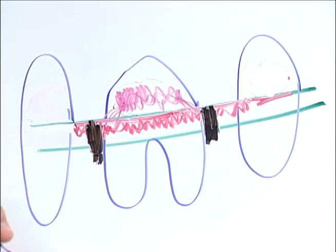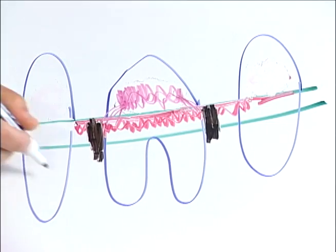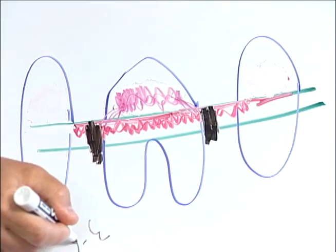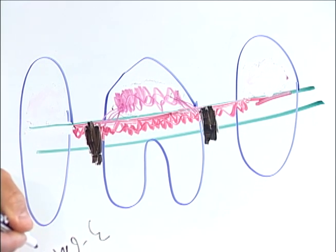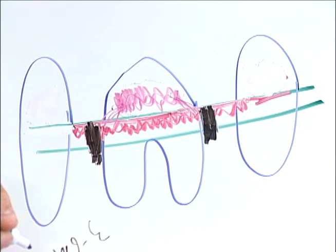Now pockets between three and six millimeters can be effectively treated by closed root planing and placement of a long-acting antibiotic. However,